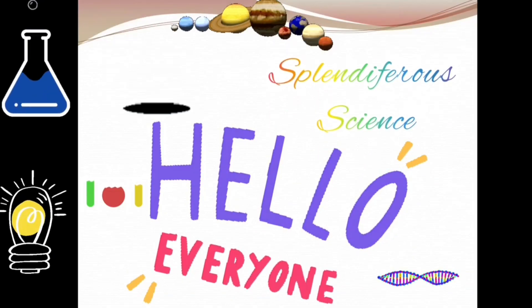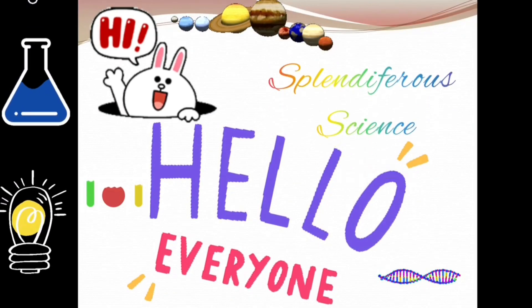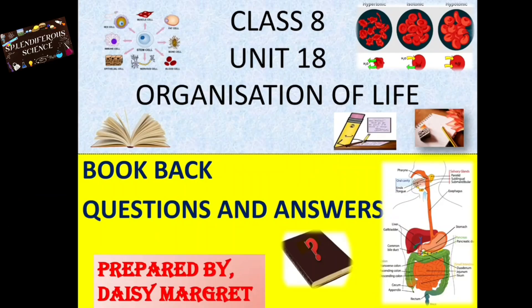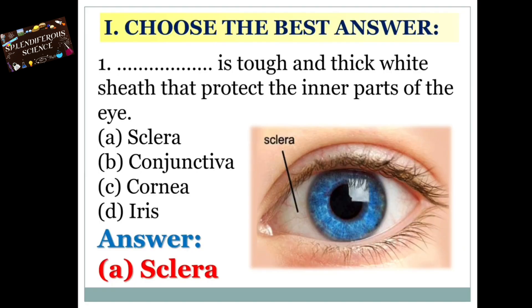Hi everyone, this is Daisy Margaret. In today's video we are about to discuss Class 8, Unit 18 - Organisation of Life, book back questions and answers. Choose the best answer: dash is tough and thick white sheet that protects the inner parts of the eye.